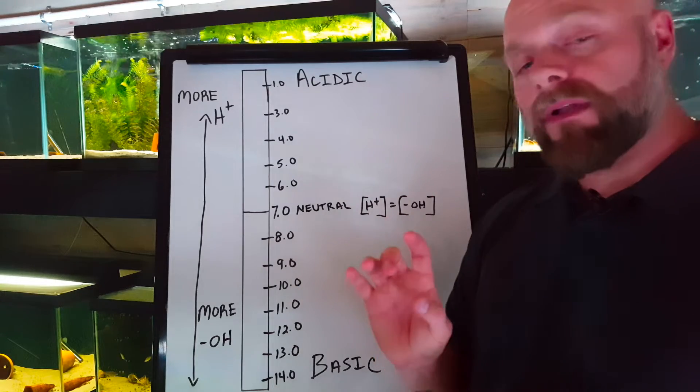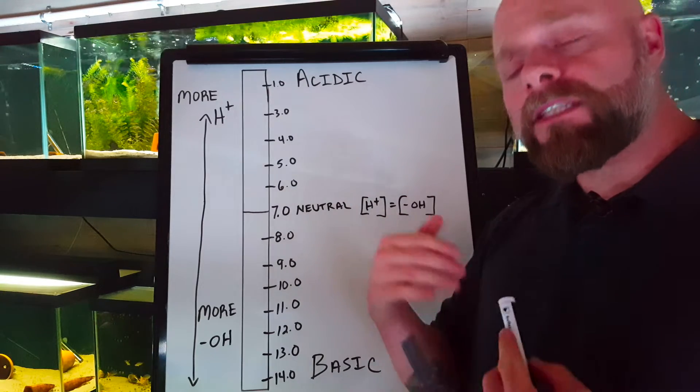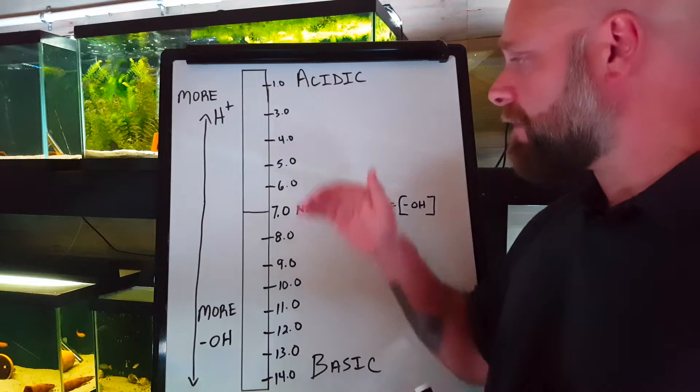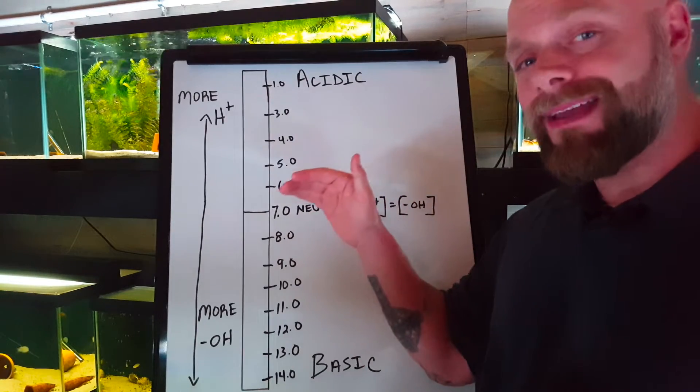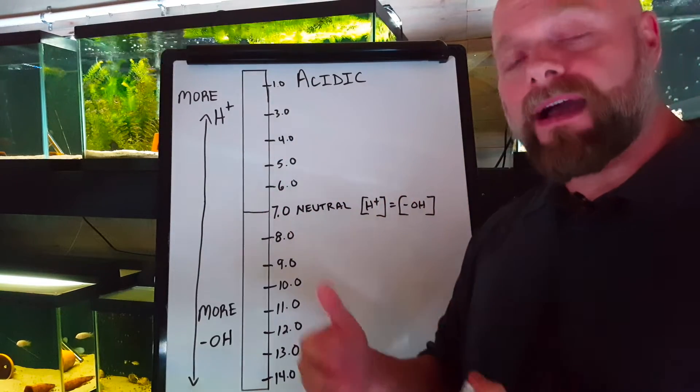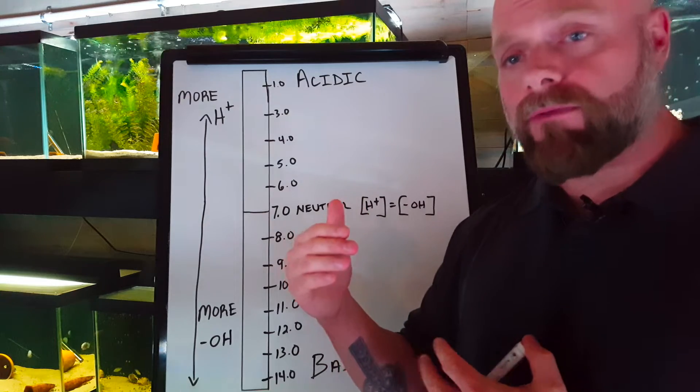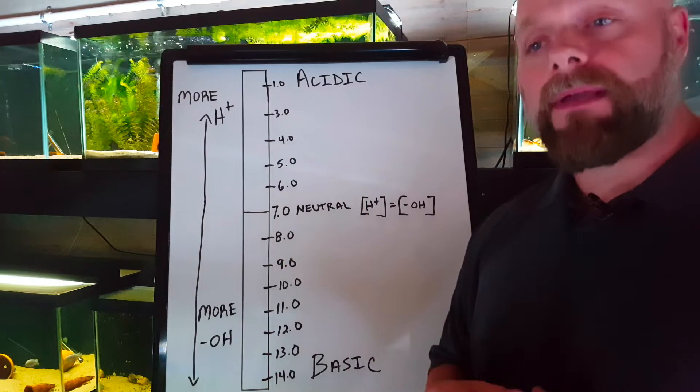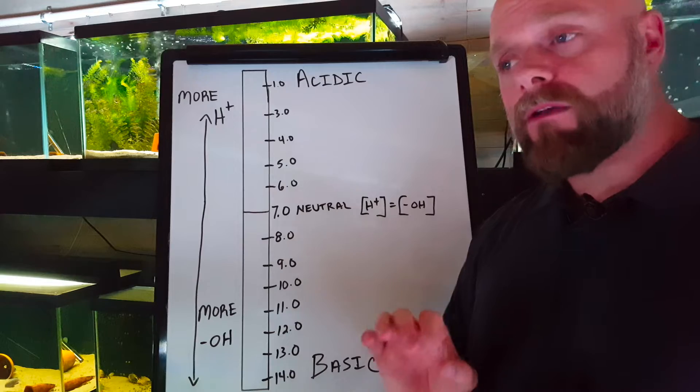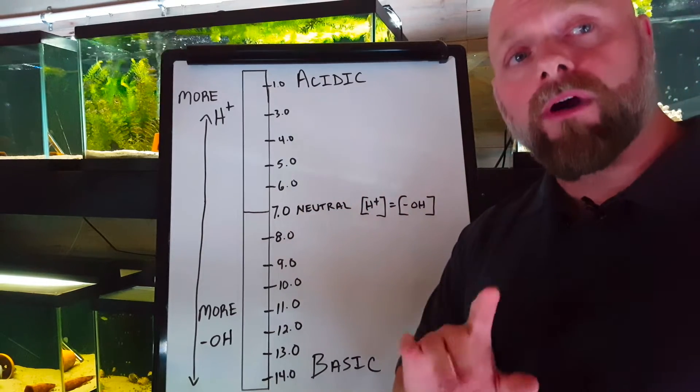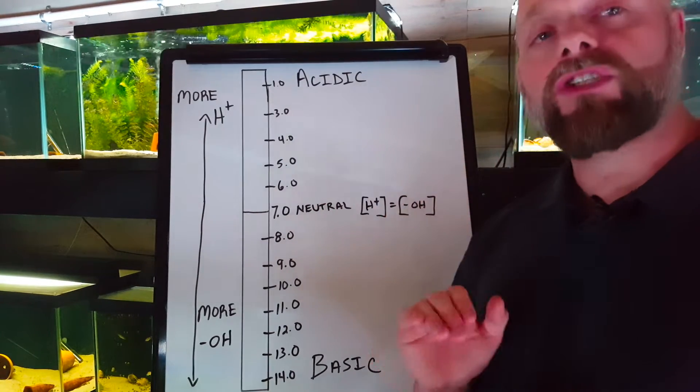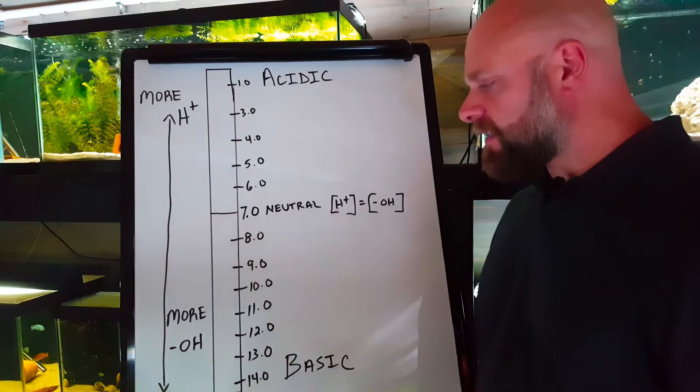The important thing to understand when it comes to fish keeping, especially wild caught fish, if they're primarily found at a certain pH, that's the pH that they thrive at. That's the pH where they're going to be able to reproduce. That's where they're going to be their best. That's not to say those fish can't live at another pH if the change is brought slowly.